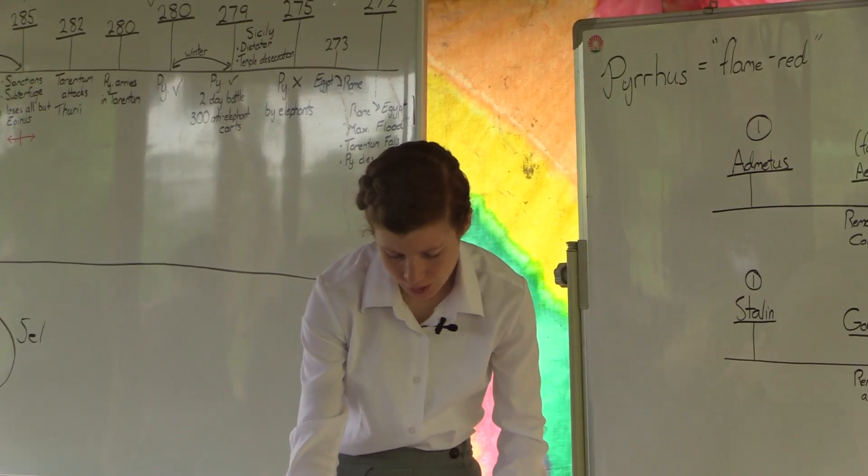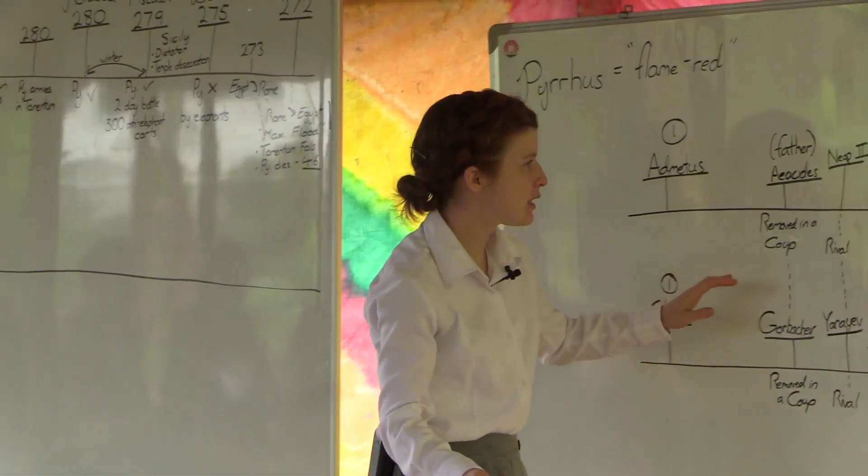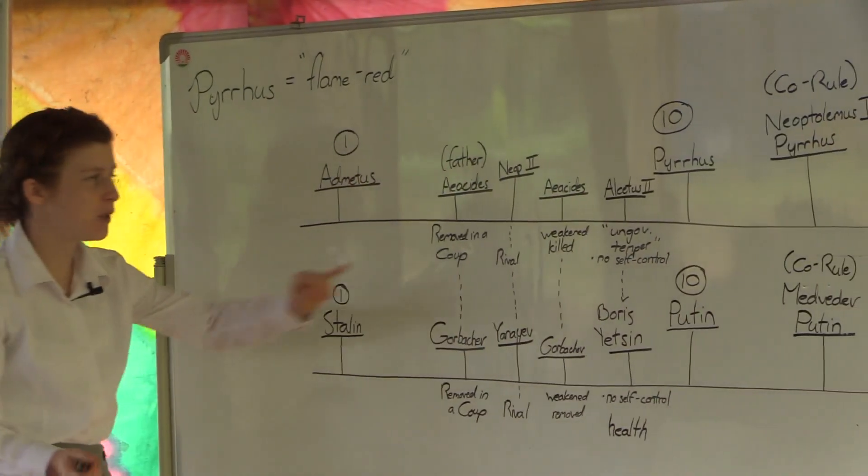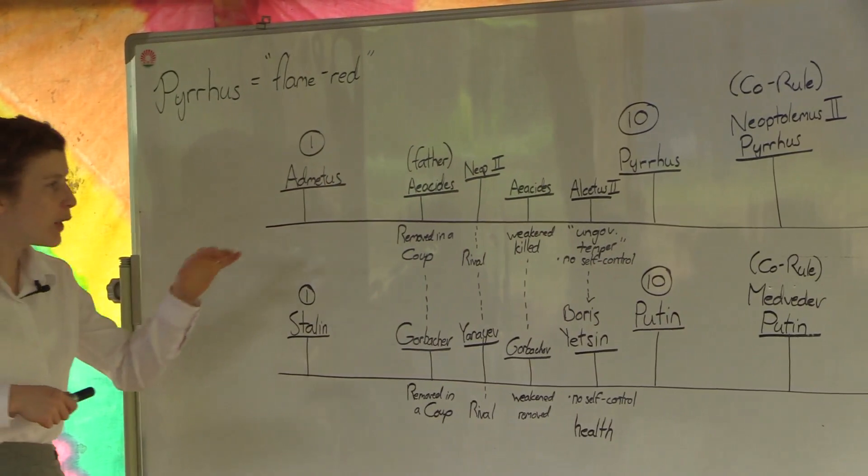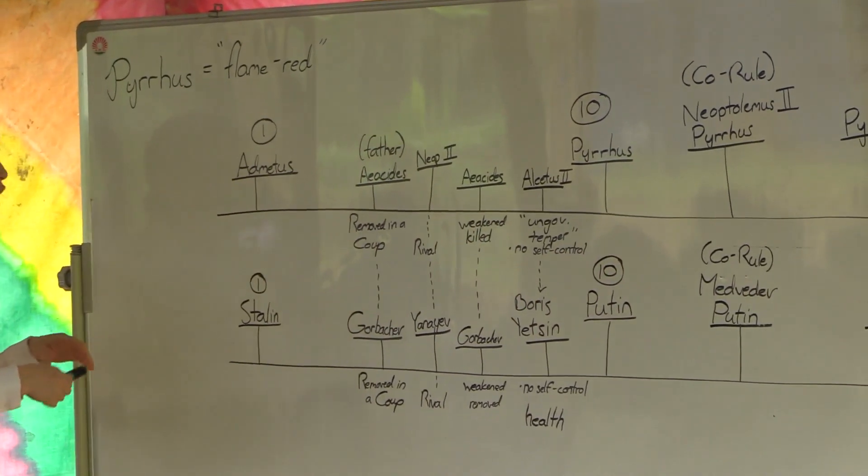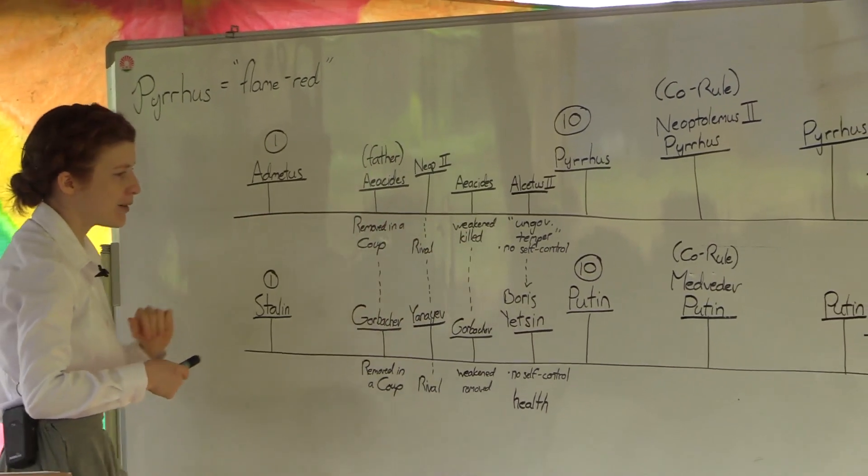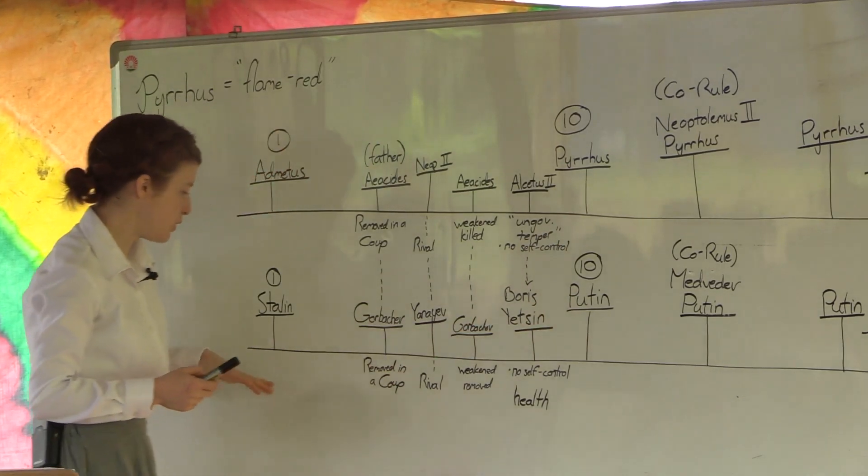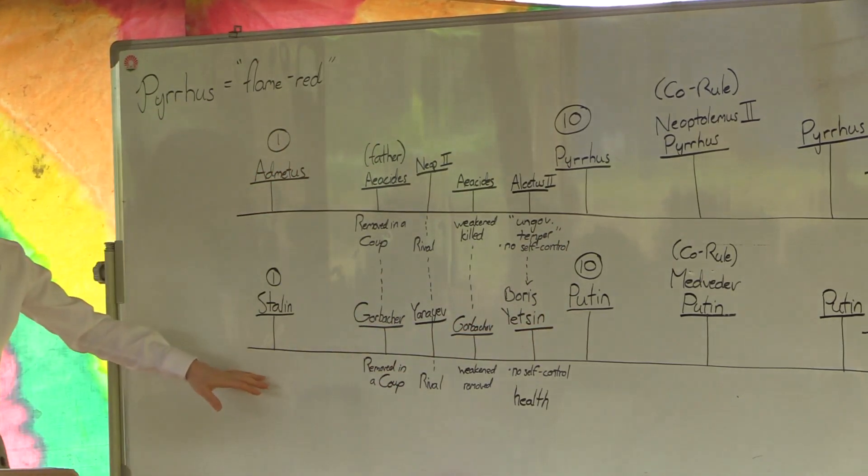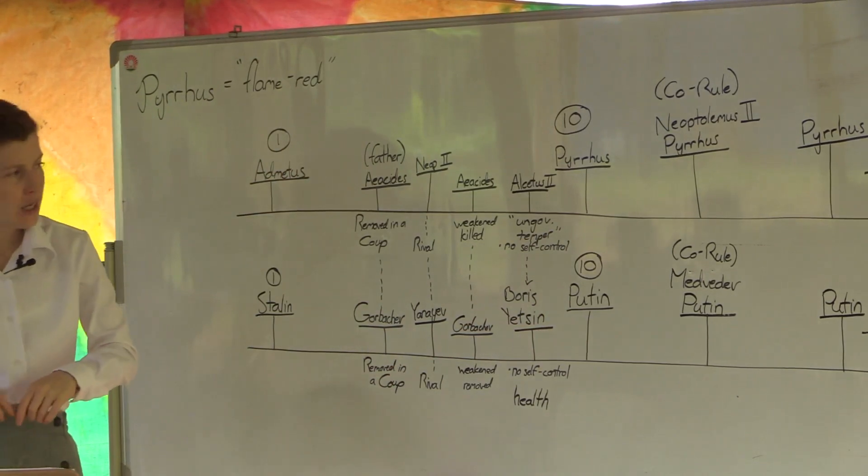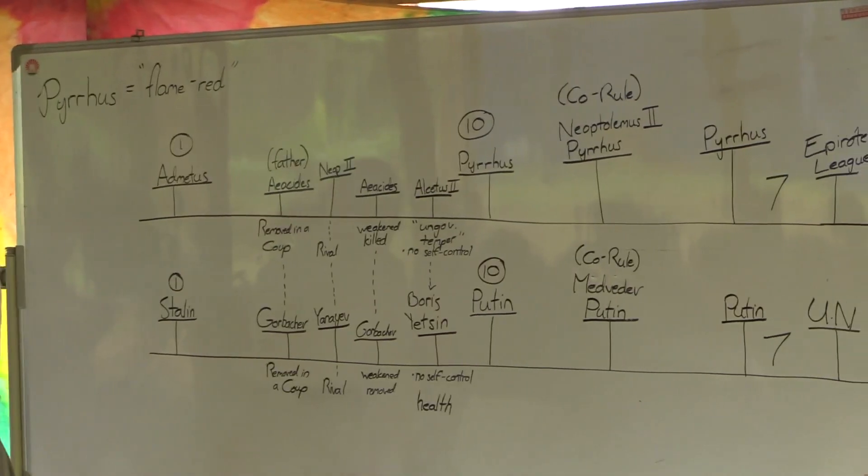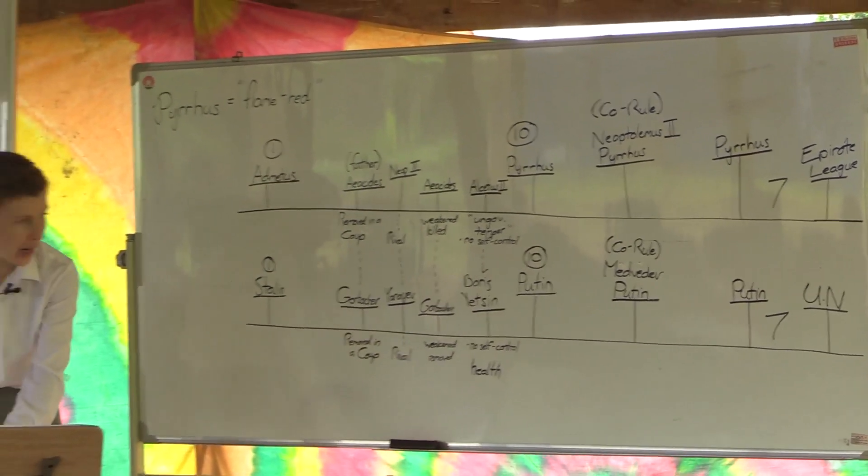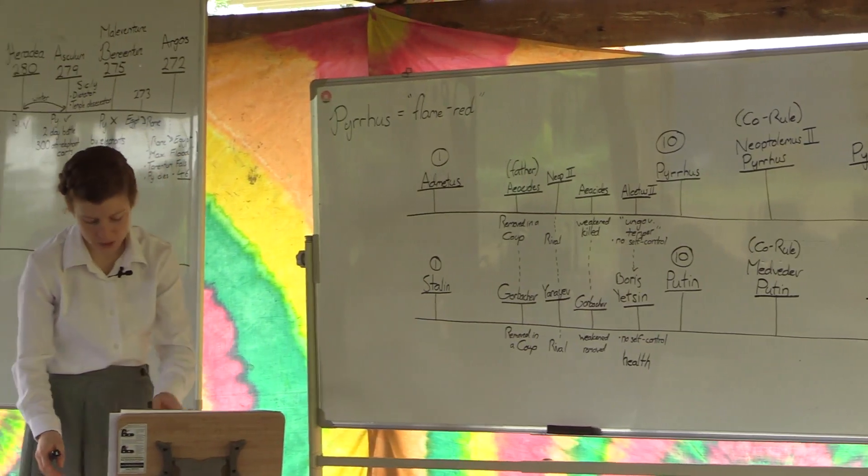So if Admetus, so if Pyrrhus equals Putin, who does Admetus represent? We understand Alpha and Omega and end from beginning. Not only is Pyrrhus Putin but Pyrrhus is also Admetus. So not only is Putin Pyrrhus but Vladimir Putin is also typified by Joseph Stalin. There are significant parallels between the life of Putin and the life of Stalin.